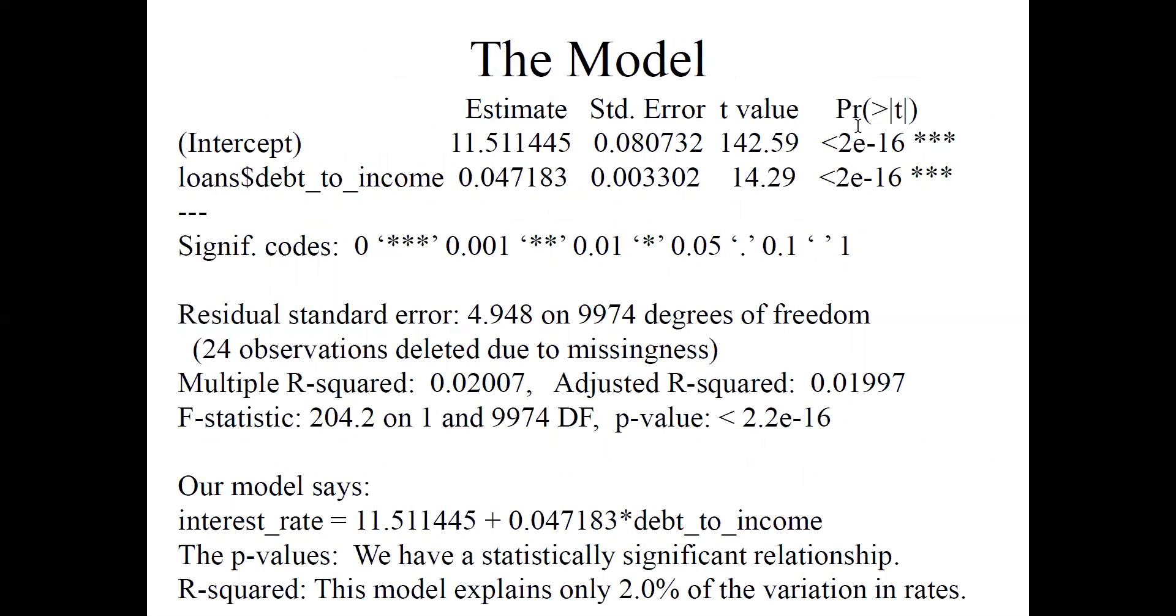P values—again, they're both very small, smaller than 2×10⁻¹⁶, so we have a statistically significant relationship. And R-squared is crummy. Again, this model explains 2% of the variation in rate.